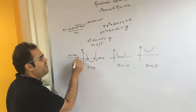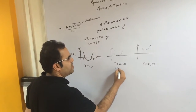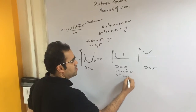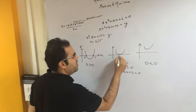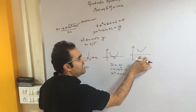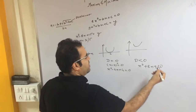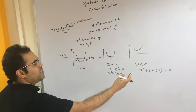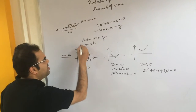For all three cases, a remains positive. For the D = 0 case, consider (x−2)² = 0, which expands to x² − 4x + 4 = 0 giving root x = 2 — the graph just touches the x-axis at that point. For the D < 0 case, consider x² + 8x + 20: the roots come out imaginary because b²−4ac is negative, so the graph never touches the x-axis. In our first example, D = 64 − 60 = 4 (positive). For the D = 0 case, b²−4ac = 0. For the D < 0 case, b²−4ac is negative. In all three, a is positive.